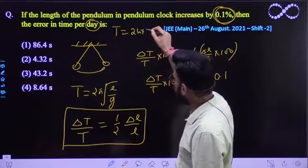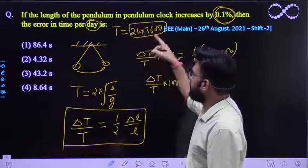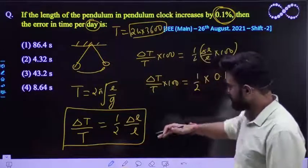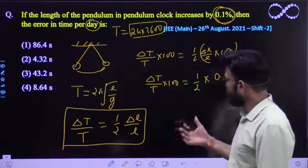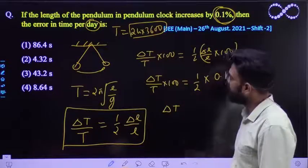So 24 hours when converted to seconds it would be equal to 24 into 3600 seconds. So this is the time in which you have to find out the error. Okay, so we'll put the value of delta T here. So you have to find out the value of delta T.